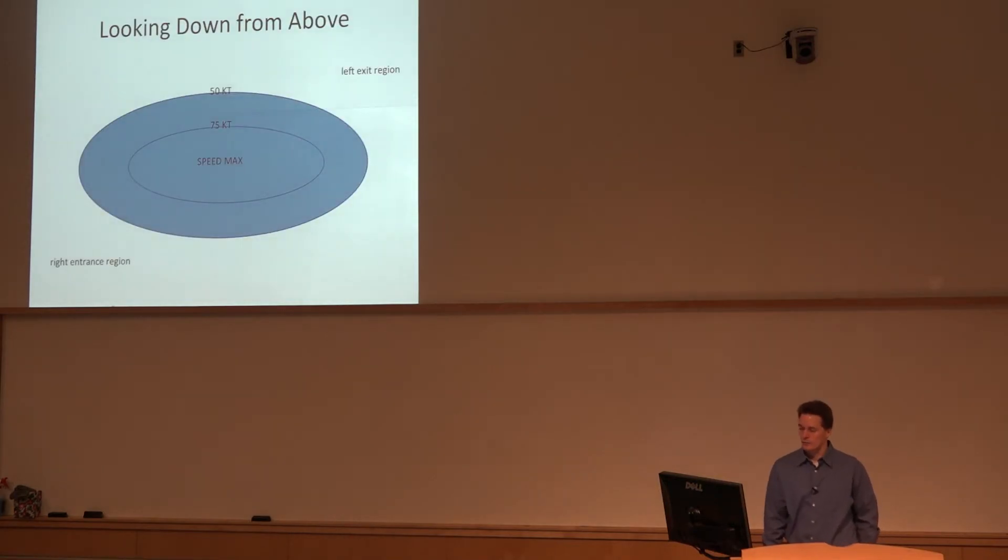Now we're looking at a plan view of the jet streak from above, looking down. In this case, if a map north typically would be up here, south is down here. We're just looking at it from above, a plot of isotachs. We've got some sort of speed max and I've highlighted the left exit and right entrance regions of the jet.